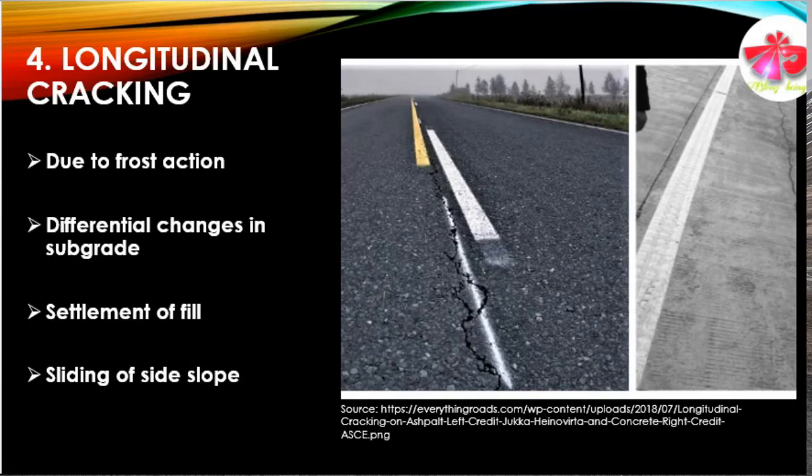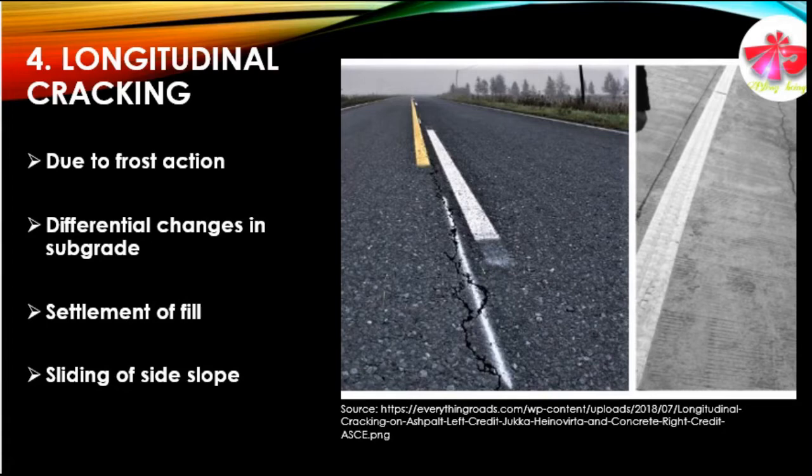The fourth failure pattern is longitudinal cracking. This type of failure forms in the pavement traversing through the full pavement thickness and is mainly due to frost action and differential volume changes in the subgrade. Settlement of fill and sliding of side slopes can also cause this type of failure pattern in the flexible pavement.